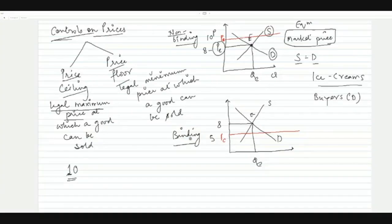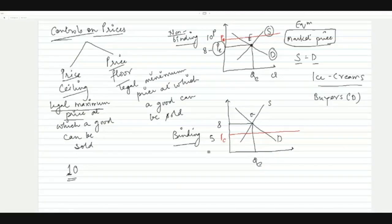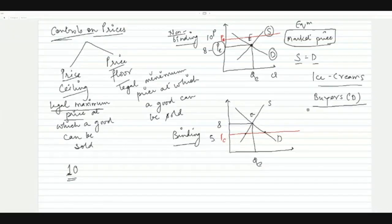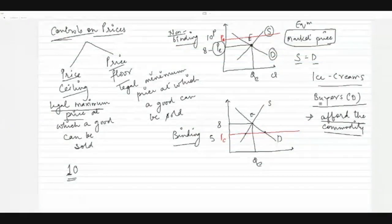Why binding? Because this policy is creating a disturbance in the market. The market price is rupees 8, but the government has set a legal maximum of rupees 5. No ice cream seller has any chance to sell at rupees 8 — all must sell at rupees 5, even though market forces indicate equilibrium at rupees 8. This policy is introduced for buyers, because buyers want prices to come down so they can afford the commodity.